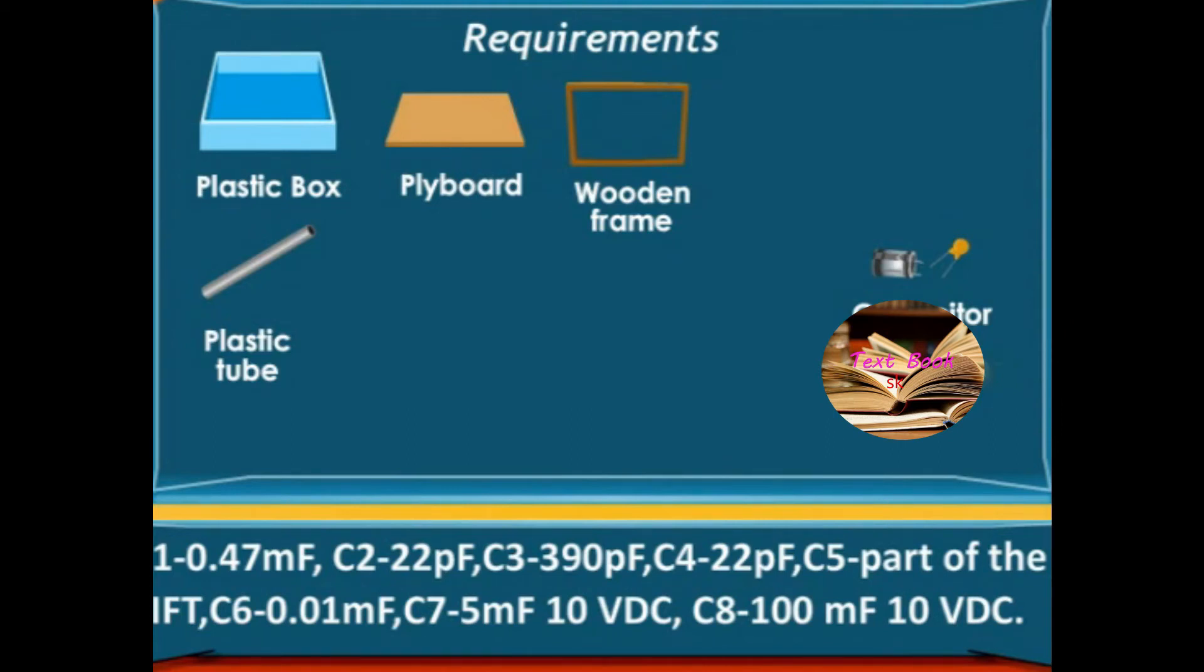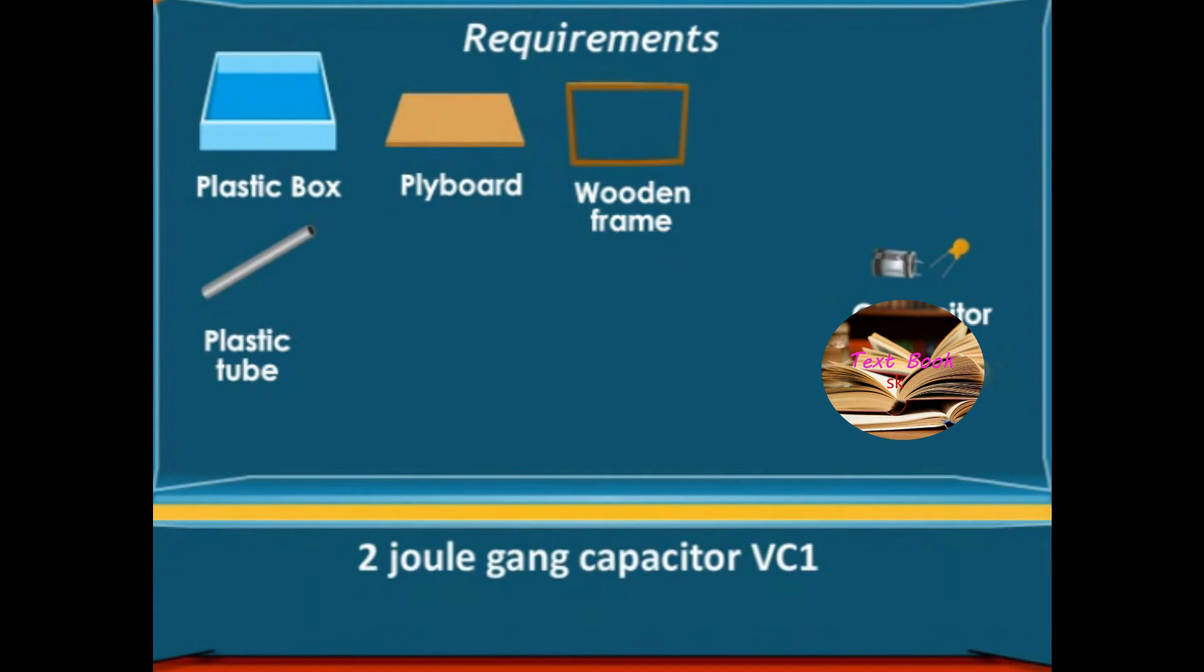C6: 0.01 microfarads, C7: 5 microfarads 10 VDC, C8: 100 microfarads 10 VDC, 2 joule gang capacitor VC1.